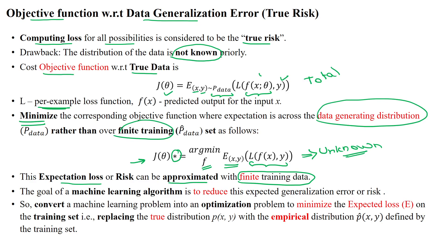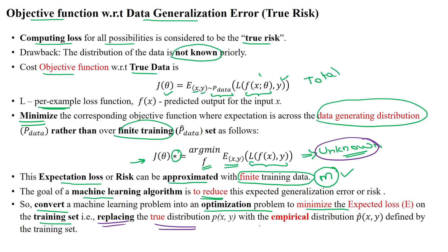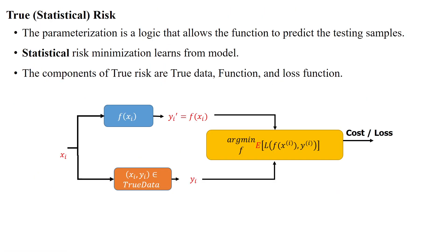Instead of the unknown dataset, we take a finite number of samples m for the training dataset, because machine learning and deep learning models use a training dataset with m number of samples. The machine learning algorithm can reduce the error by applying optimization with the training dataset. We transform the problem into an optimization problem to minimize the expected loss based on the training dataset — replacing the unknown true data distribution with the empirical dataset of m number of samples in the training dataset.